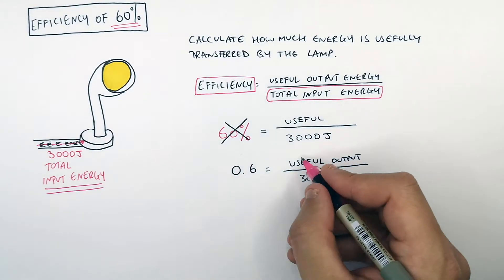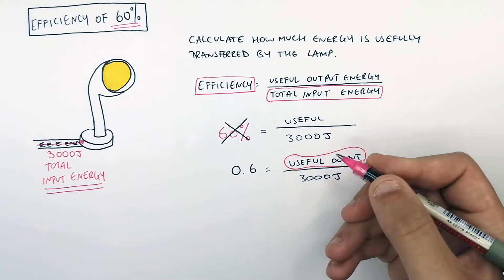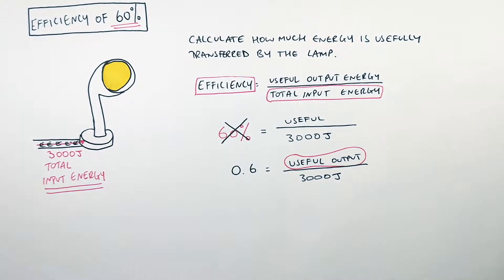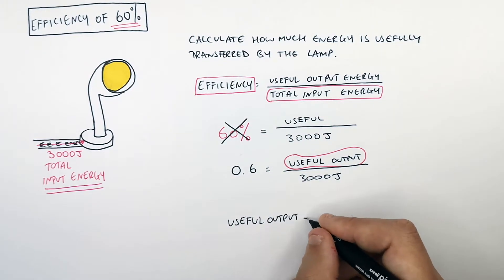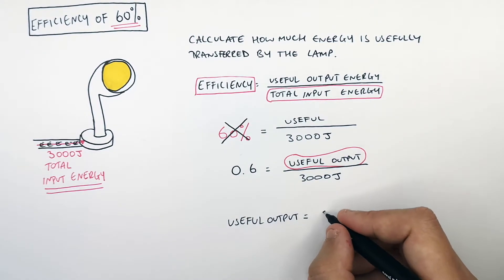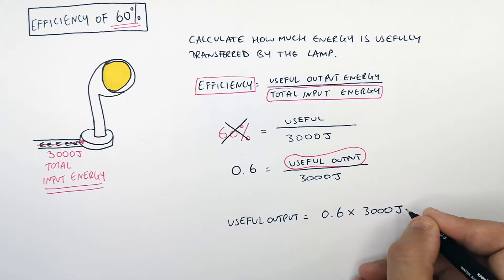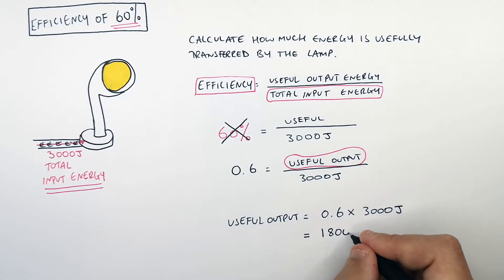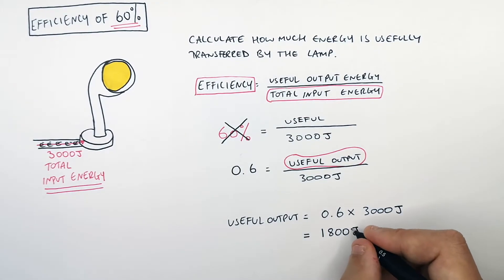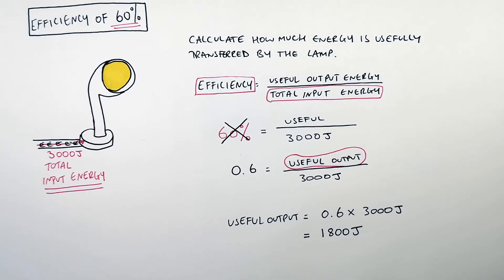You must rearrange for the useful output energy. So useful output energy equals 0.6 times 3,000 joules, which gives 1,800 joules of energy usefully transferred by the lamp.